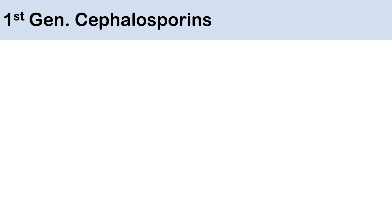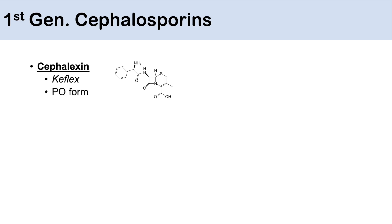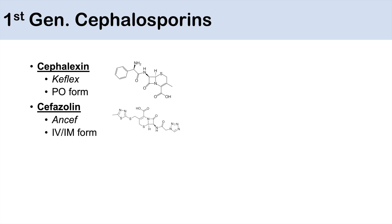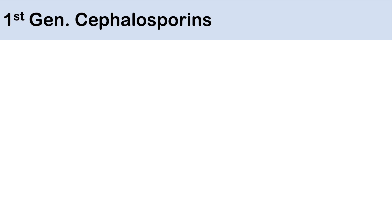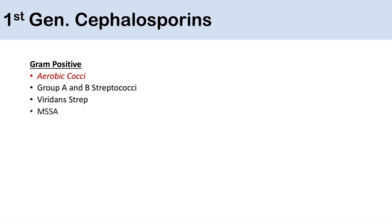First-generation cephalosporins include cephalexin (also known as Keflex), which is a PO form taken by mouth. The other first-generation cephalosporin is cefazolin (also known as Ancef), which is essentially the equivalent of cephalexin in IV or IM form. First-generation cephalosporins have good bacterial coverage for gram-positive bacteria, especially aerobic cocci. They also cover group A and group B streptococci, viridans strep, and methicillin-sensitive Staph aureus (MSSA).